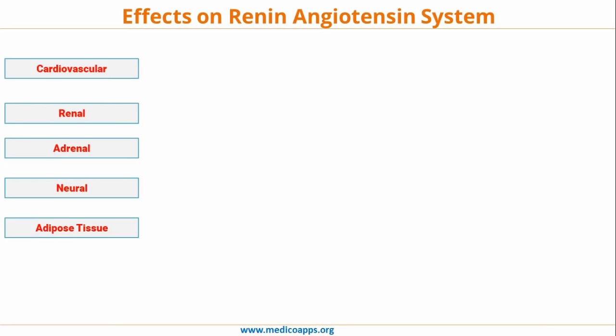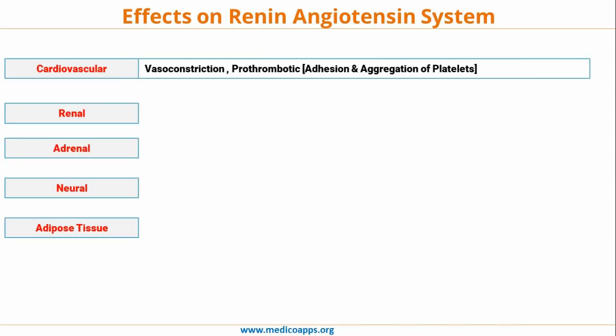Let's look at the effects of the renin-angiotensin system organ system by system. On the cardiovascular system, the most prominent effect is vasoconstriction. There is also some prothrombotic activity, because angiotensin 2 leads to adhesion and aggregation of platelets. So vasoconstriction is the most prominent cardiovascular action, and angiotensin 2 is also considered prothrombotic.